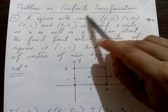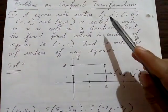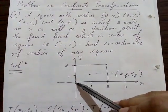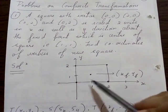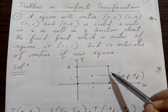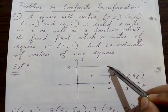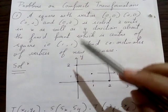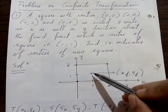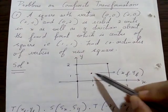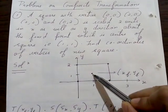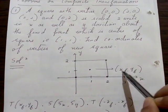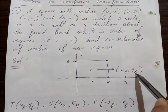Let us put these points on the graph. The first point is (0,0), second is (2,0), third is (2,2), and the fourth is (0,2). The fixed point is (1,1). So (1,1) is nothing but xf, yf.